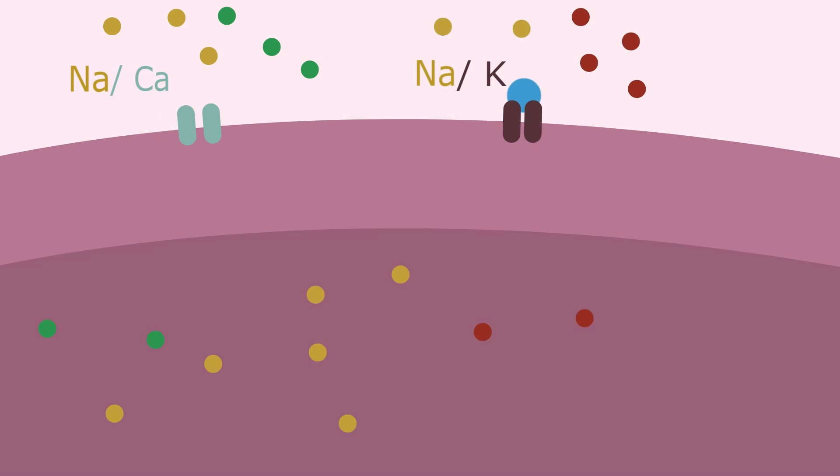This accumulation of sodium inside of the cell causes this exchanger to work against its concentration gradient, and therefore it will transport less calcium out of the cell. We will have both an accumulation of sodium and calcium into the cell, and it's this accumulation of calcium that will affect the contractility of the heart muscle.